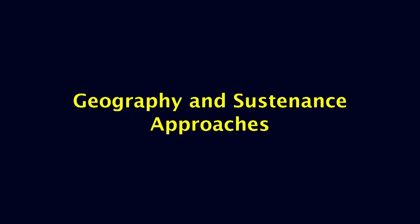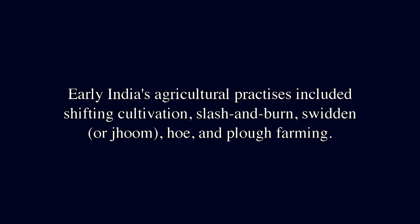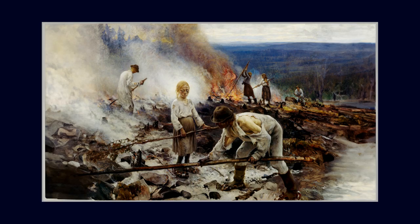Geography and sustenance approach. Early India's potential for agriculture, as well as its regional differences, were heavily influenced by terrain. Early India's agriculture practices included shift cultivation, slash and burn, swidden or jhum, and hoe and plough farming. The routes and valleys made it easier for pastoralists to move between Tibet in the east and Afghanistan or Central Asia in the north.